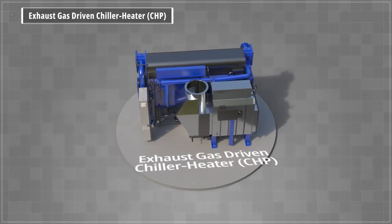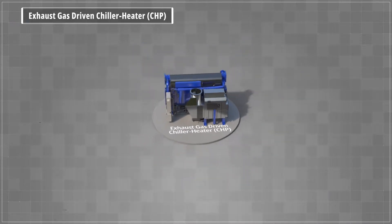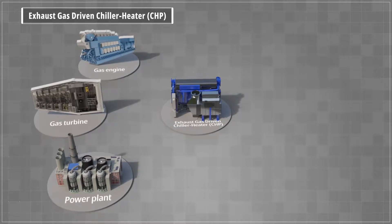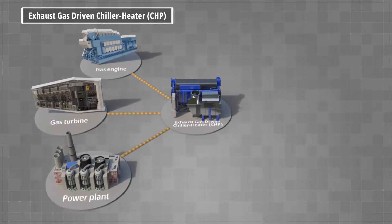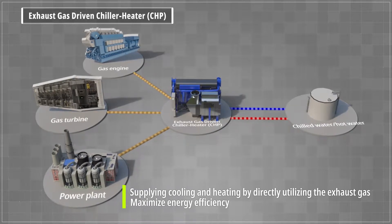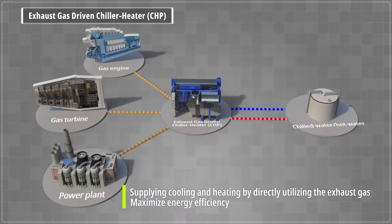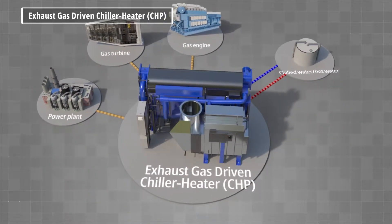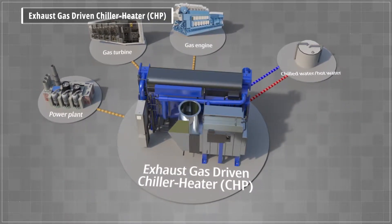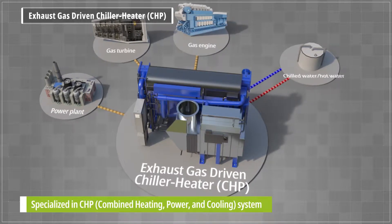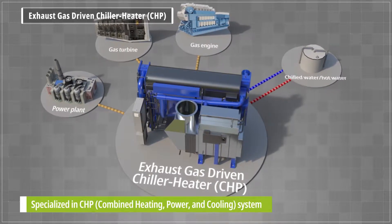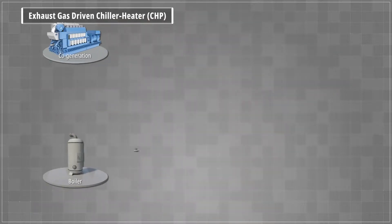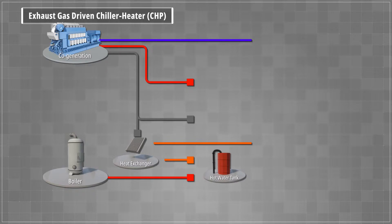World Energy's Exhaust Gas Driven Absorption Chiller and Heater, also referred to as CHP type, utilizes exhaust gas from an incinerator or gas turbine to generate cooling and heating. Direct recovery of the exhaust gas with minimal loss maximizes energy efficiency. CHP series are supplied to combined heat and power generation facilities, where CHP and HWARL units are used together.